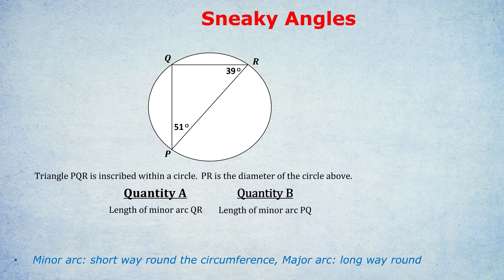How else can they test it? Let's take a look at this question. Triangle PQR on screen is inscribed within a circle. Just quickly, inscribed means touching all the edges. So the corners, the vertices of the triangle touch the circumference of the circle. Then it says PR is the diameter of the circle above.